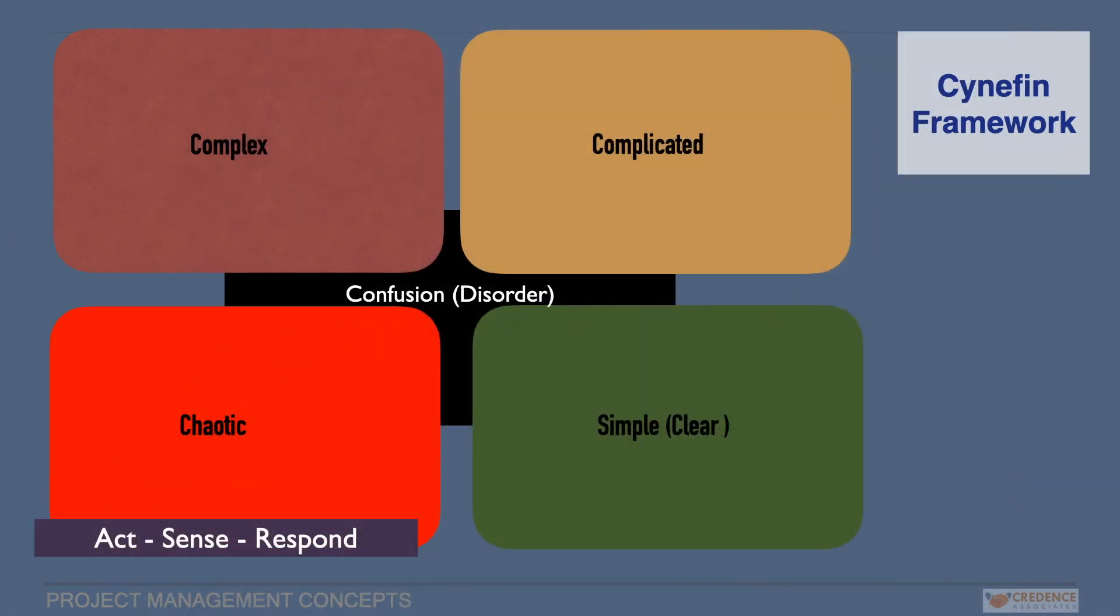Chaotic domain. This is catastrophic. Cause and effect are unclear. Framework recommends act-sense-respond. There is no time to think as the event had already occurred, only option is to face the situation, look for stability, and try to move to a complex domain. Lessons learned will help for future situations, and communication becomes the key.